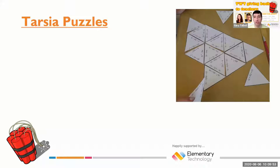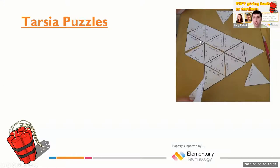And this is something which is called Tarsier Puzzles. You might have seen these used before or you might be totally brand new to Tarsier Puzzles. So basically, Tarsier Puzzles are, as you can see on the screen, certain shapes that you build together where pupils match up certain answers.